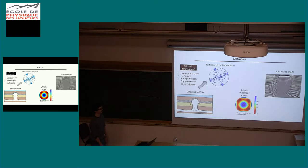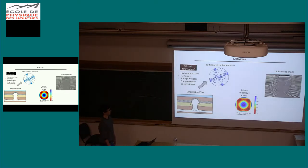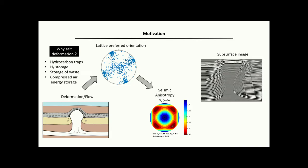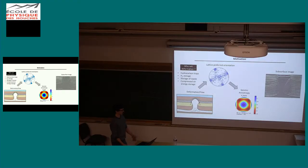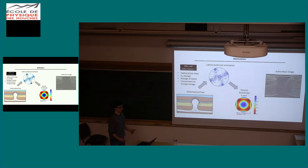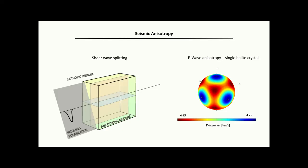We got this idea from studies done on olivine, which has also been discussed before, for example by Lucan. If the single crystals are seismically anisotropic — and halite is seismically anisotropic on single crystal scale — then this would lead to effective seismic anisotropy on scales important for seismic wavelengths.